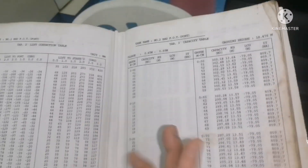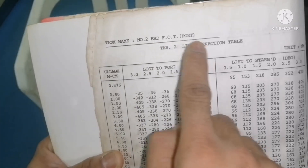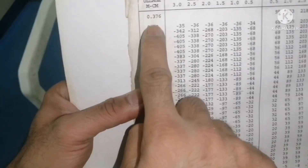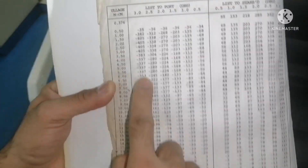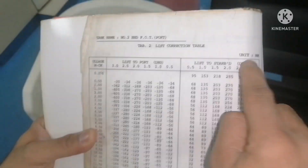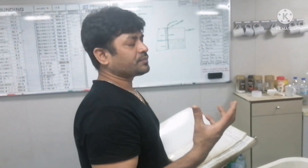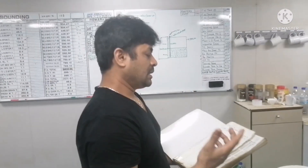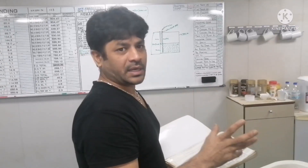The second condition is list. This is the list correction table for the same tank — number two fuel oil tank, port side. Again, the ullage in centimeters is given here. If the list is to port 0.5 degrees or 1 degree, the correction value is shown. And list to starboard gives the same correction value on the other side. These are the two corrections we need to apply before reading the exact quantity inside the tank.